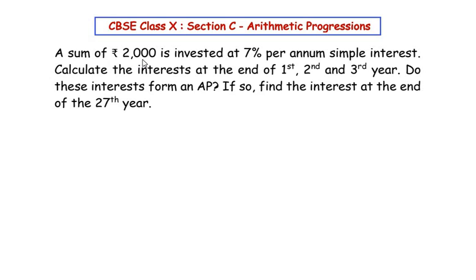A sum of rupees 2000 is invested at 7% per annum simple interest. Calculate the interests at the end of the first, second, and third year. Do these interests form an AP? If so, find the interest at the end of the 27th year.